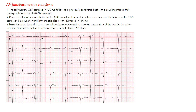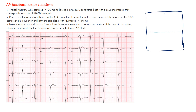AV junctional escape complexes are typically narrow — they have narrow QRS complexes, less than 120 milliseconds, which is normal in adults — following a previously conducted beat, with a coupling interval that corresponds to a rate between 40 and 60 beats per minute. Let's take a step back and figure out what we're looking at.